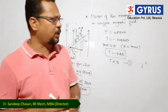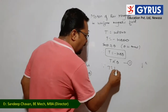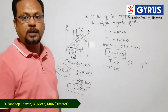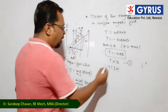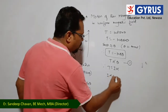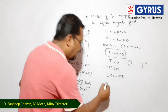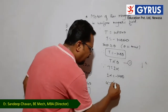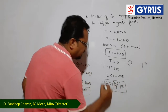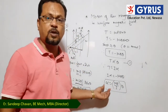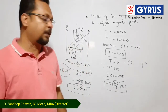We know that torque T = I × alpha, where I is the moment of inertia and alpha is the angular acceleration. Therefore, I × alpha = −mu × B × theta, which gives alpha = −(mu × B / I) × theta. This is the expression for the angular acceleration of a bar magnet placed in a uniform magnetic field performing angular simple harmonic motion.